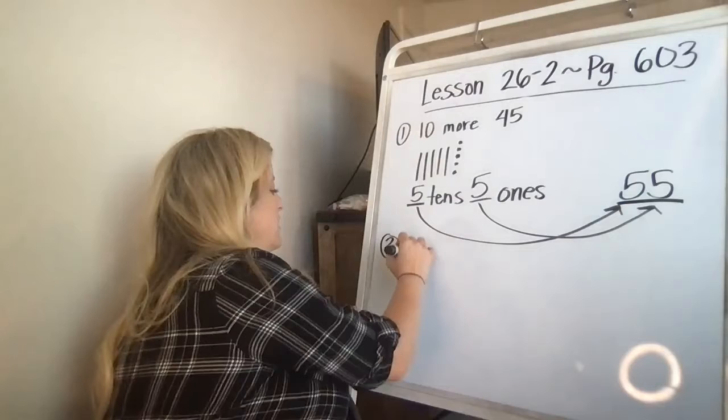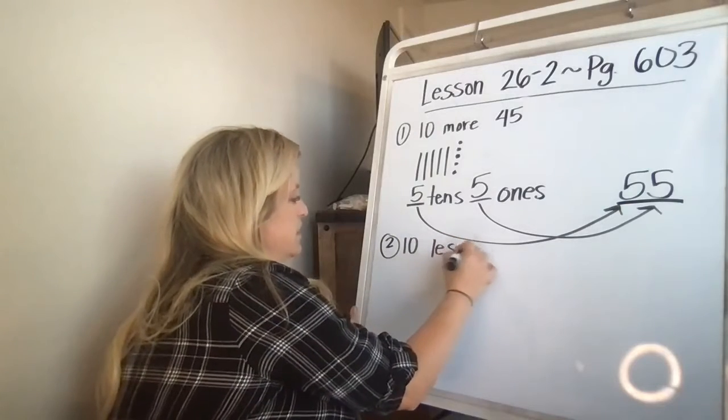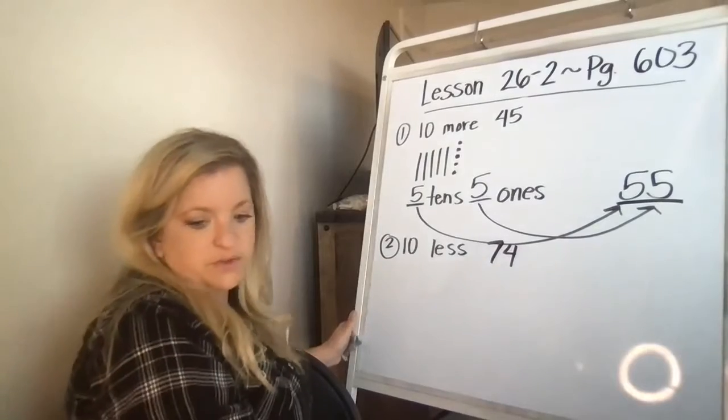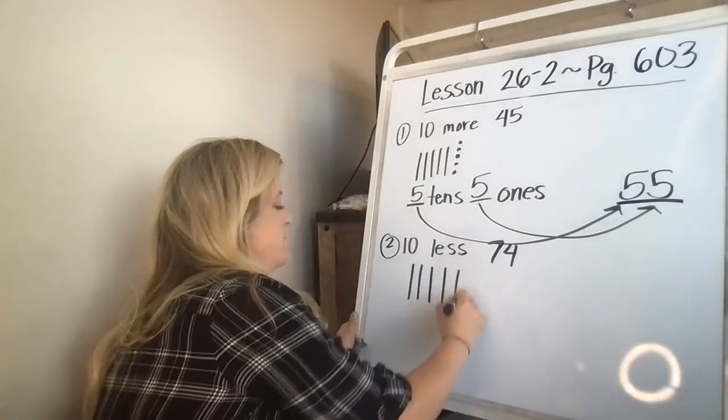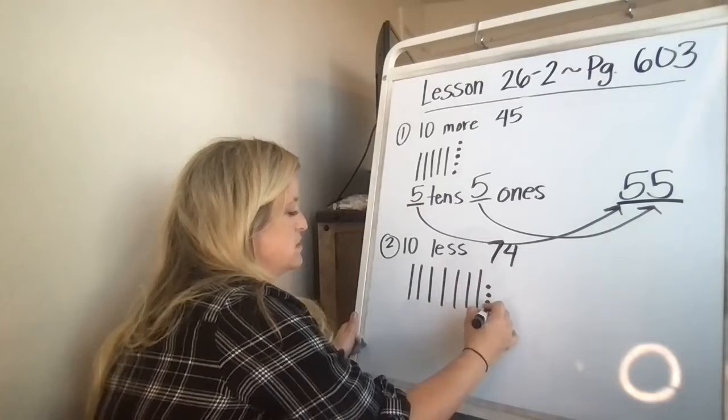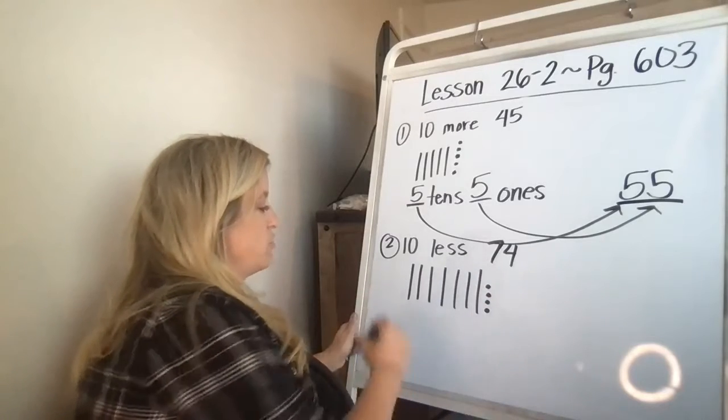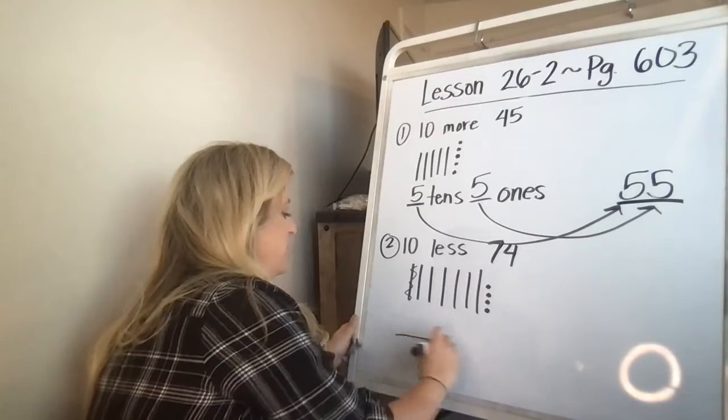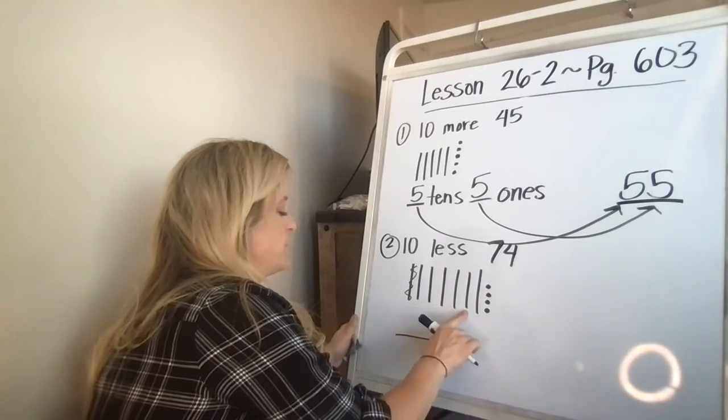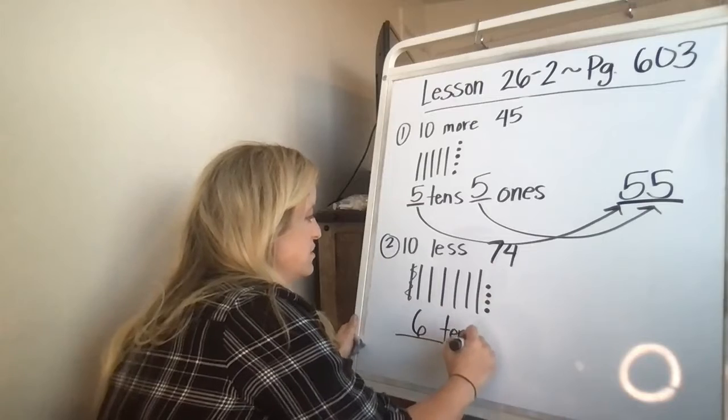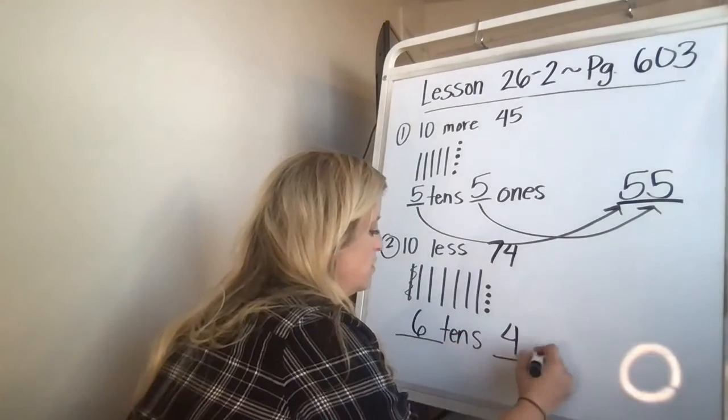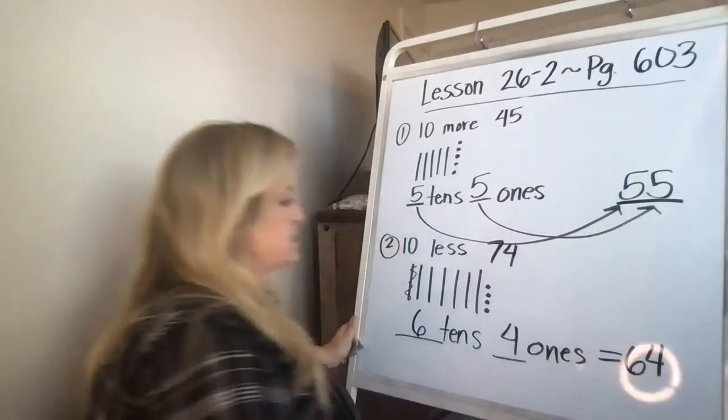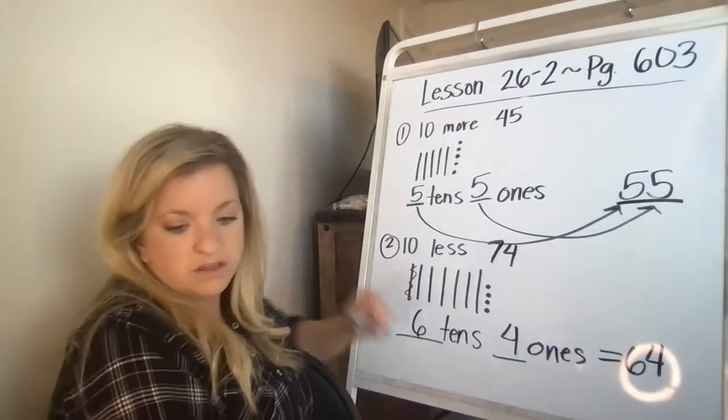Number two is 10 less than 74. So they drew seven, one, two, three, four, five, six, seven, and four dots. And you're going to now cross one out because you have seven and you need to take one away. So now you have one, two, three, four, five, six tens. You still have four ones. And if you put the six and the four together, you have 64.